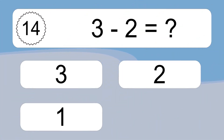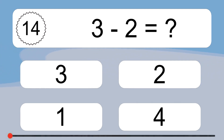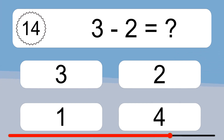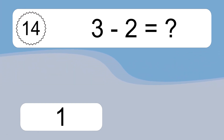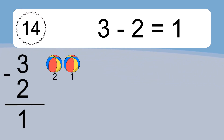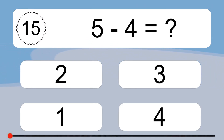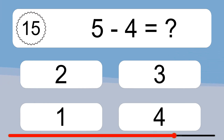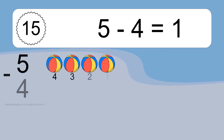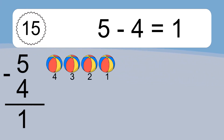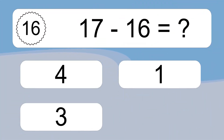3 minus 2 equals what? 3 minus 2 equals 1. Let's count it: 1. 5 minus 4 equals what? 5 minus 4 equals 1. Let's count it: 4, 3, 2, 1. 17 minus 16 equals what?